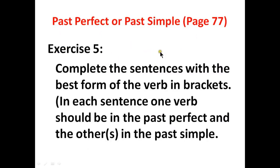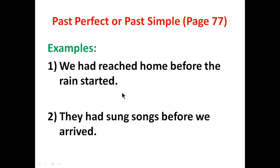Now we are going to do the next exercise. You will complete the sentences with the best form of the words in brackets. In each sentence, one verb should be in the past perfect and the other in the past simple. If there are two expressions of past time, one will be in past perfect while the other will be in simple past. For example: 'We had reached home before the rain started' — 'had reached' is past perfect, 'started' is simple past.